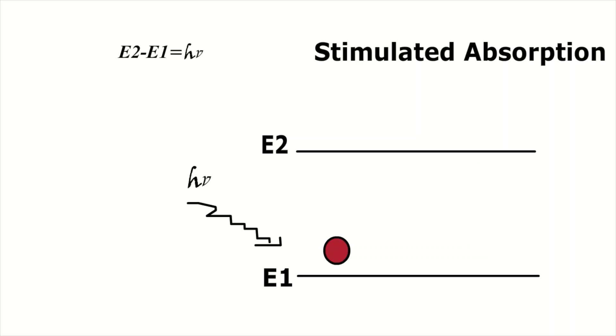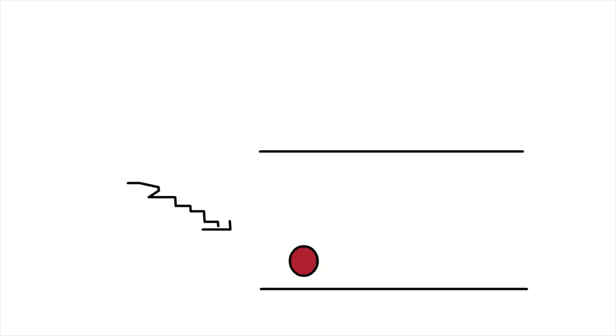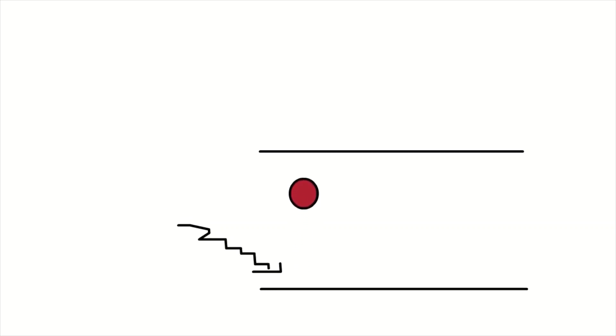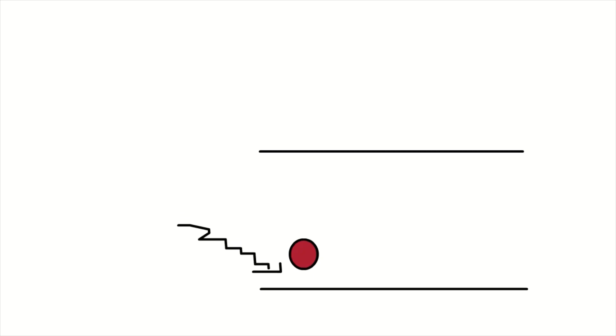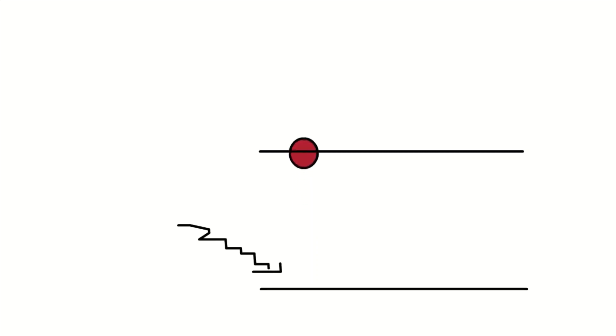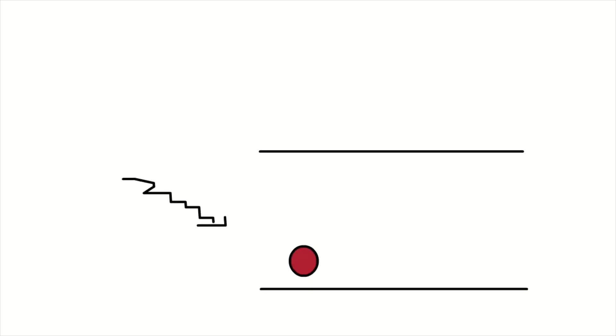Suppose a photon has energy Hμ which is exactly equal to the difference between the two energy levels. The electron can absorb one photon at a time. The electron absorbs this photon and moves to the excited energy level. As you can see, the electron initially in the lower energy level moves upward to the excited energy level with the absorption of the photon. This process is known as stimulated absorption.